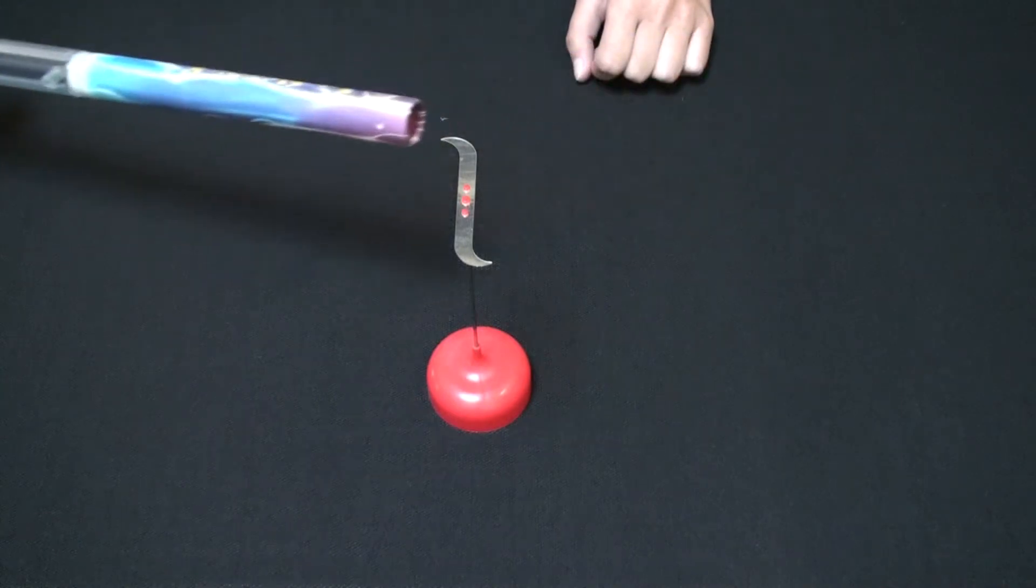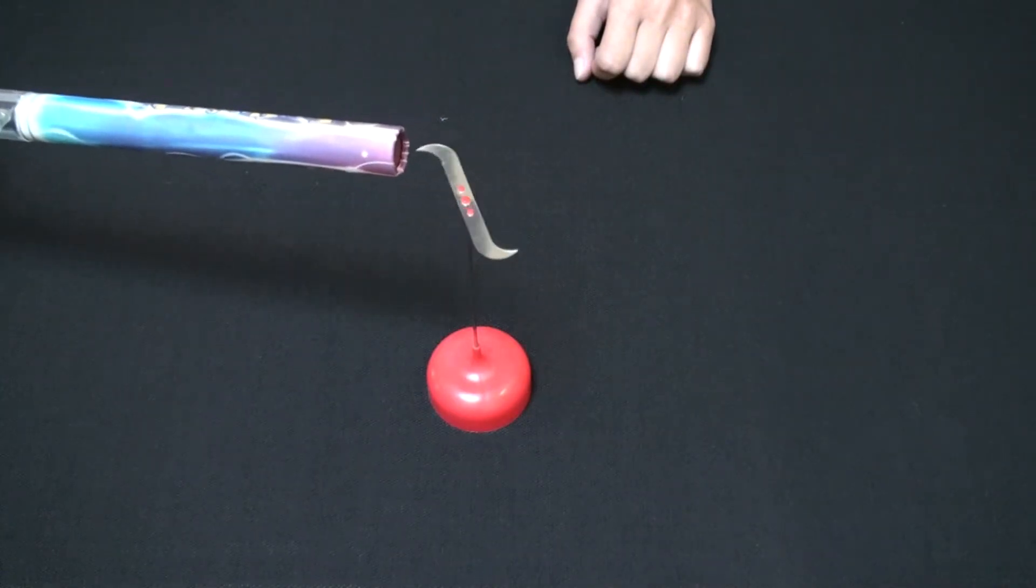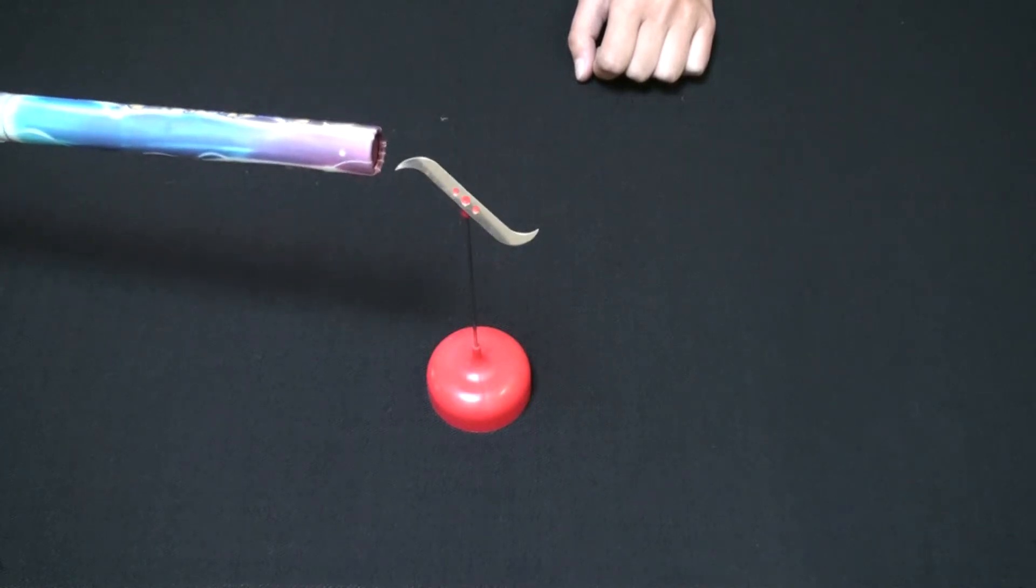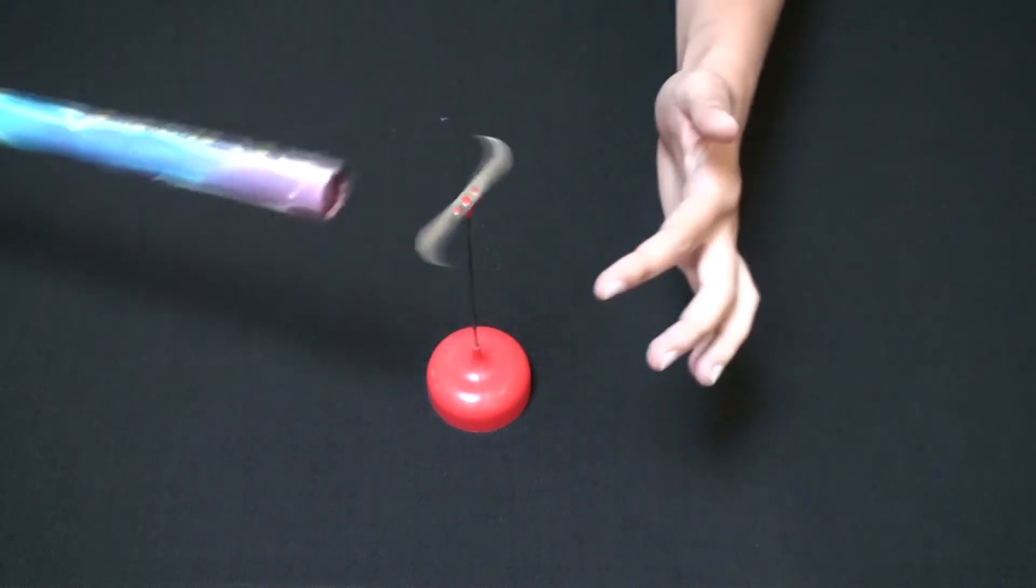Position the funfly stick so it is next to one of the sharp ends of the silver z-spinner. If it does not spin right away, give it momentum by moving the funfly stick forward and backward.